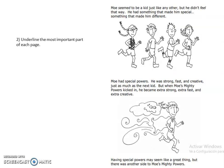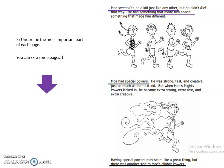Now, look at page 2 and tip number 2. It says, underline the most important parts of each page. And you can skip some pages. For example, the first one. These are the most important parts of page number 2. My summary starts here with information I found on page 2. So, I skipped page 1.